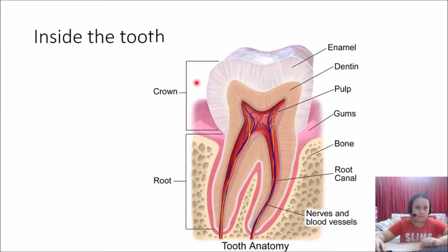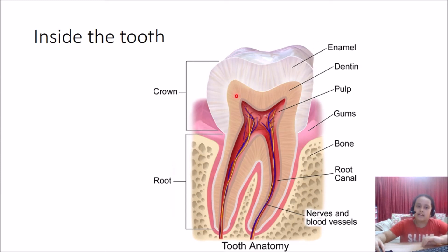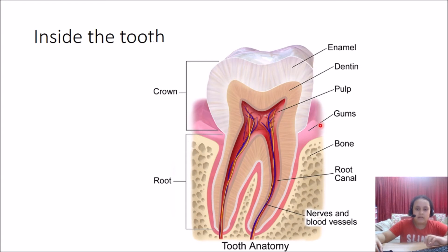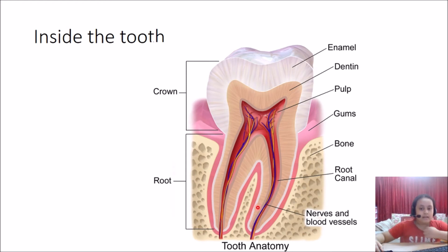Now let's go inside a tooth. The first layer you can see is the enamel — this is the hardest part of the teeth. Below it we have the dentine, which is hard but not as hard as the enamel. Inside that we have the pulp, which is kind of like the heart of the teeth. The pinkish area you see is the gum, and right below the gum is the bone. The pulp extends into two legs called the root canal, and inside the root canal we have the nerves and blood vessels.